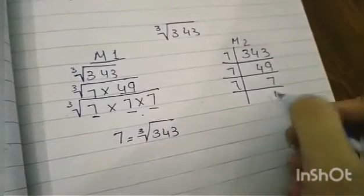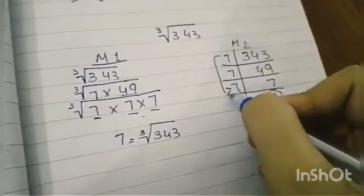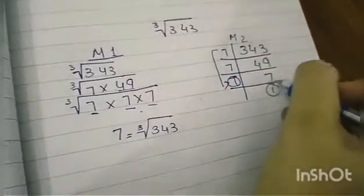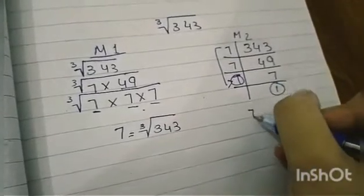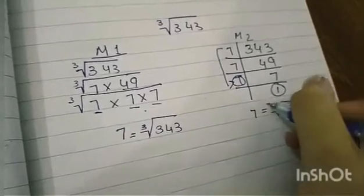7 times 1 is 7. We got our 1 here. And the third one is 7. So this is our answer. The third level is our answer. Here also, 7 equals the cube root of 343.